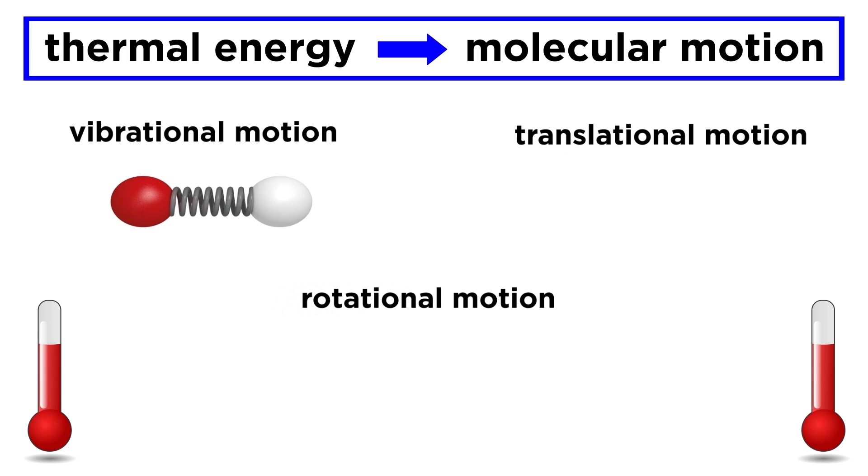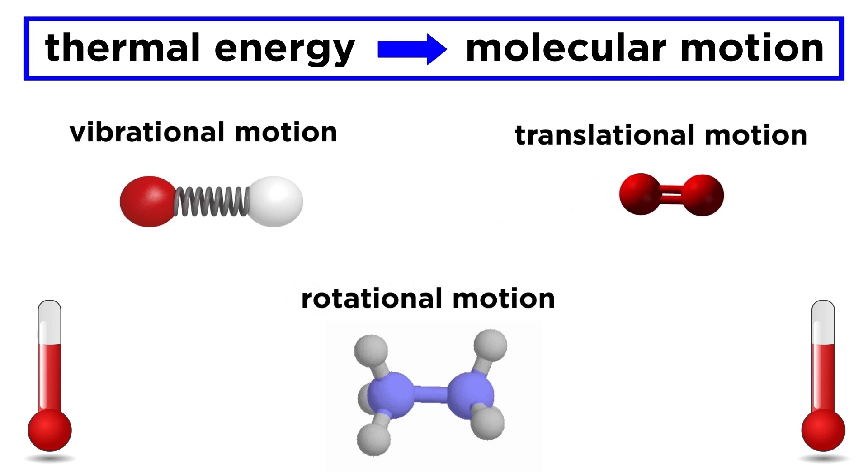We will get to vibrational motion later when we examine IR spectroscopy, and translational motion is how they move around, either in the air or in solution, but rotational motion is what we will be concerned with here, as rotating the sigma bonds in a molecule will produce different orientations for a molecule which we call conformations.